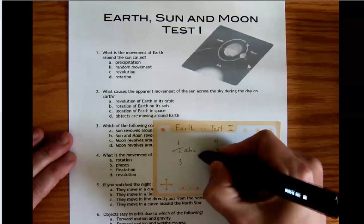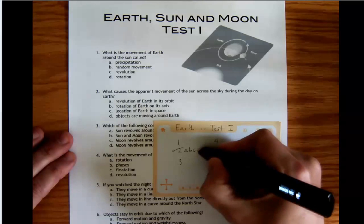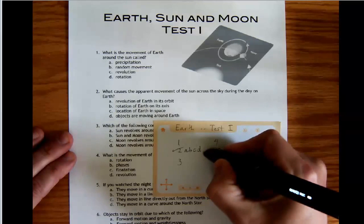C, location of Earth in space? Or D, objects are moving around Earth?